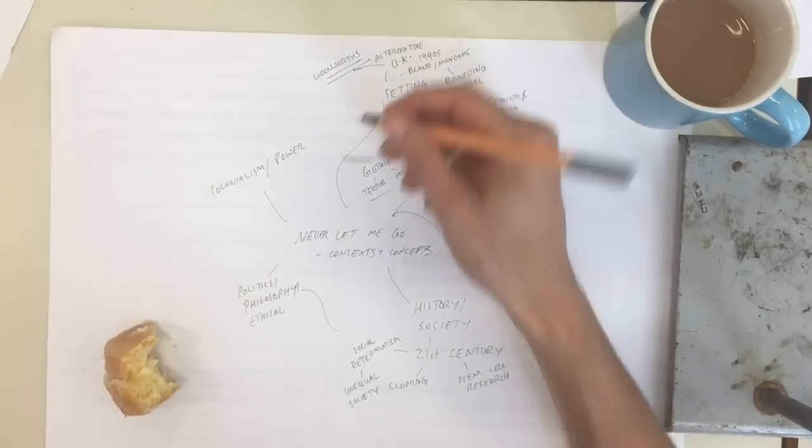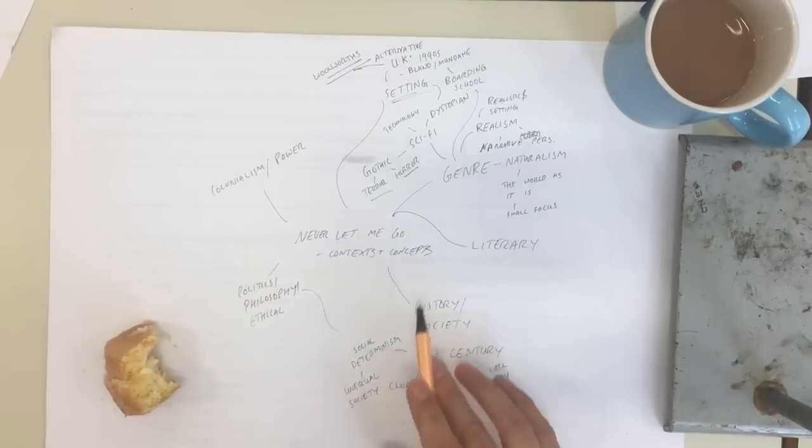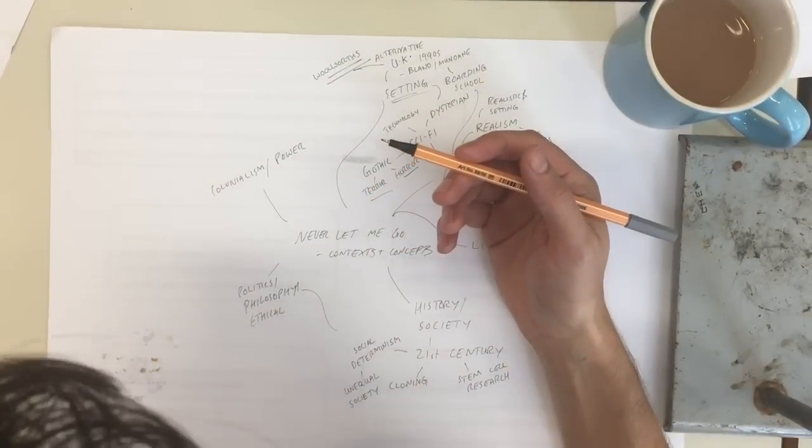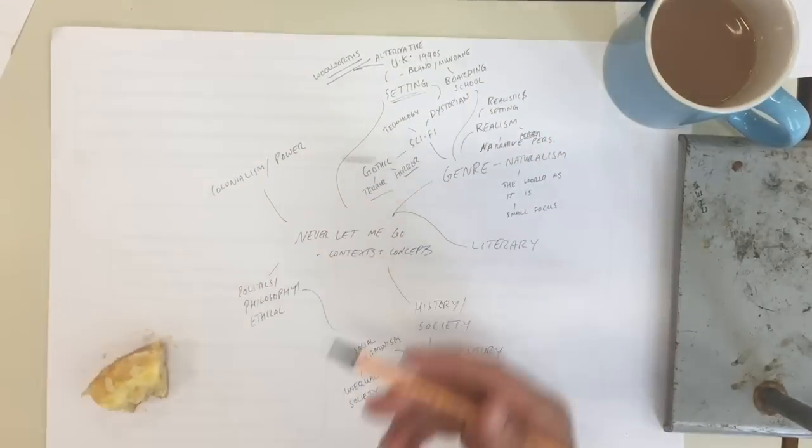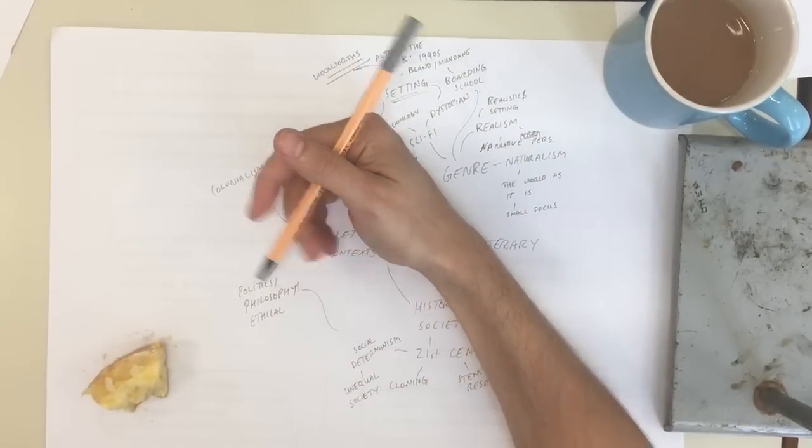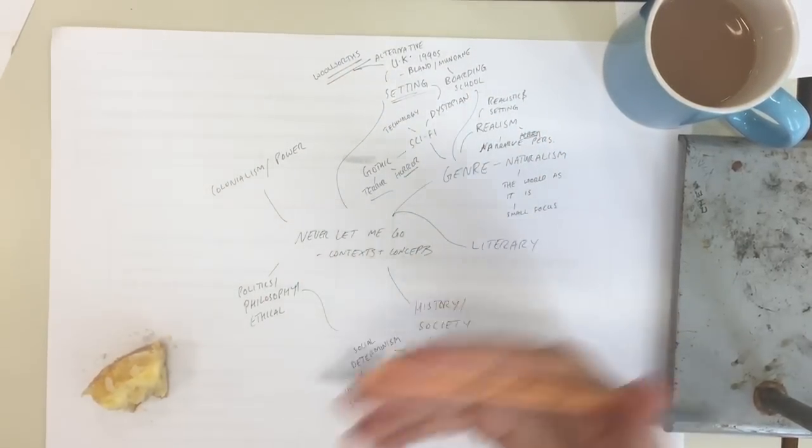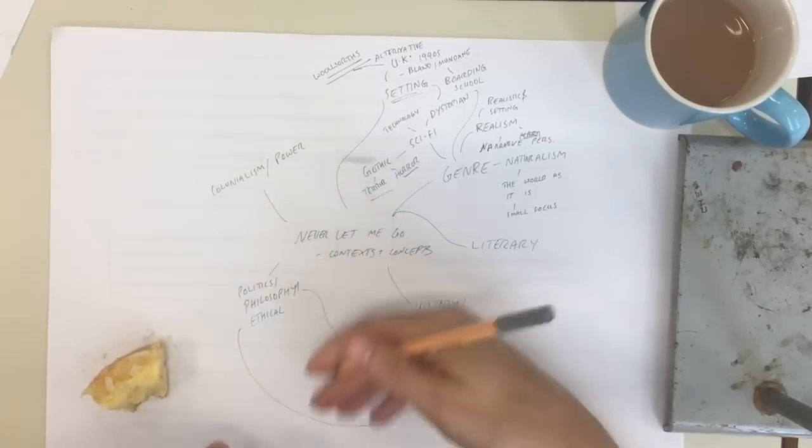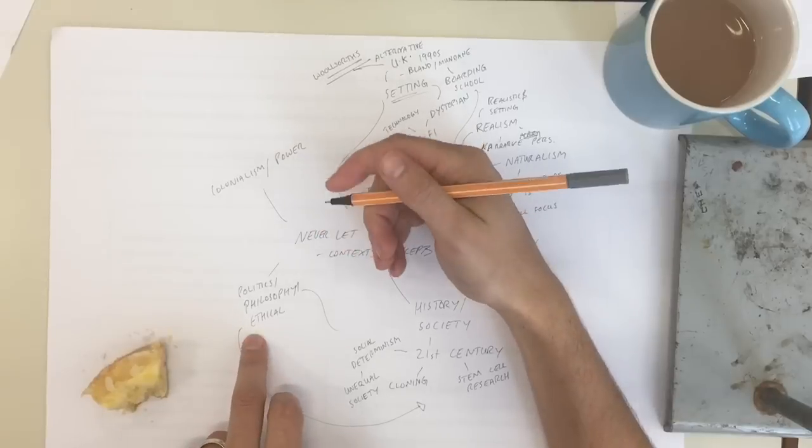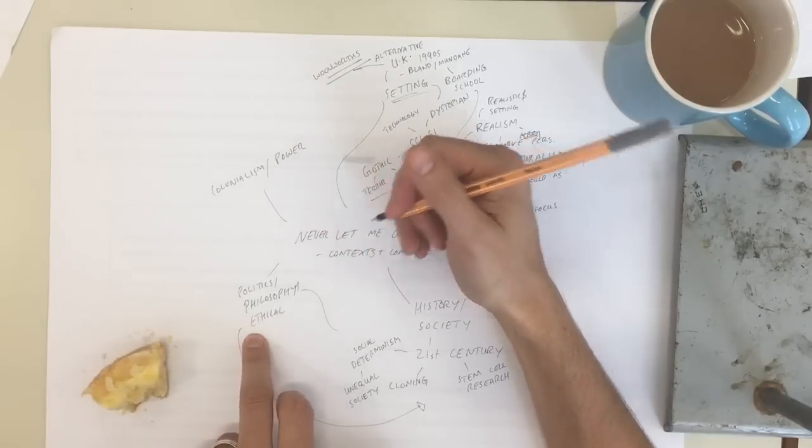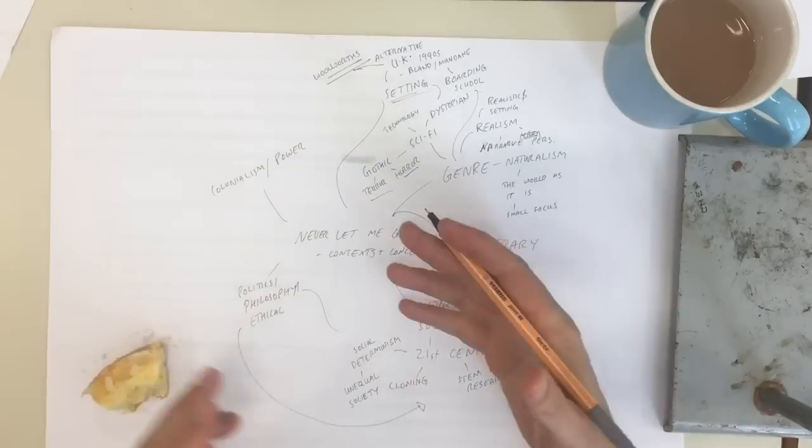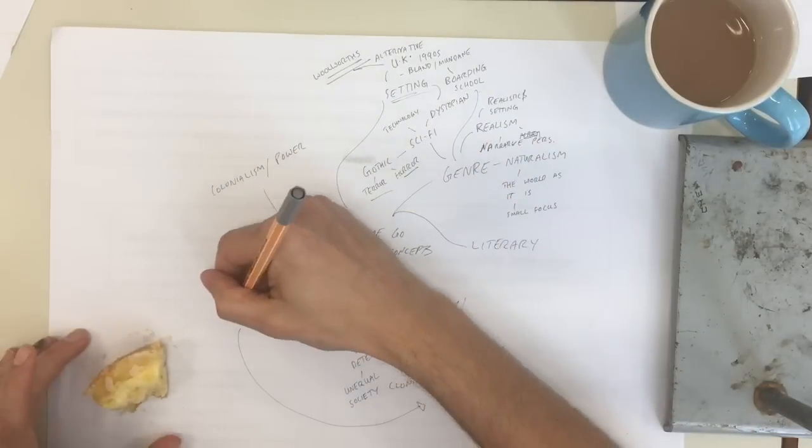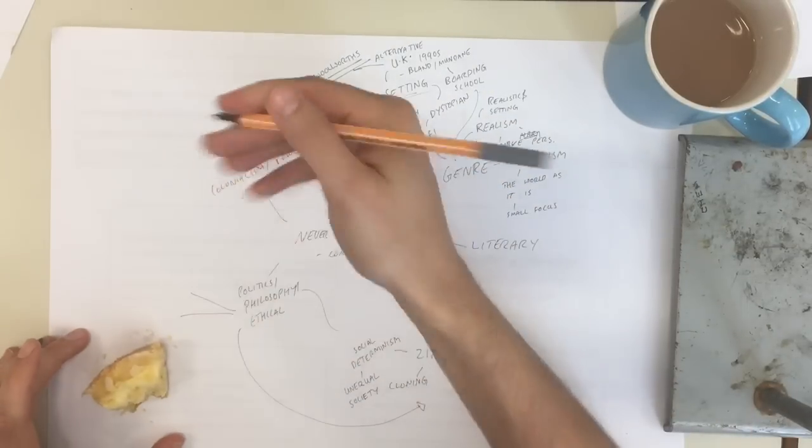Some other issues then within Never Let Me Go, in terms of the context, the political philosophy and the ethical questions are really important, and so I need to have a bit of cake to get ready to talk about them. So, politics, philosophy, ethical questions, it all stems from the issue of the cloning, doesn't it? It brings to the fore these ethical dilemmas. So you can do this really, really simply. You can go, should we have clones that we use? But we can get into a bit more sort of detail with the way in which we talk about things.